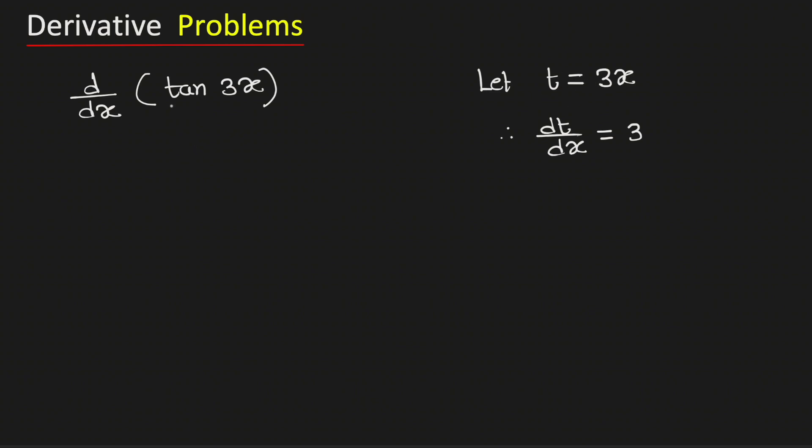Substituting this value here, tan 3x becomes tan t. As this is a function of t, we need to consider its derivative with respect to t, and we need to multiply by dt/dx. This is obtained by the chain rule of derivatives.